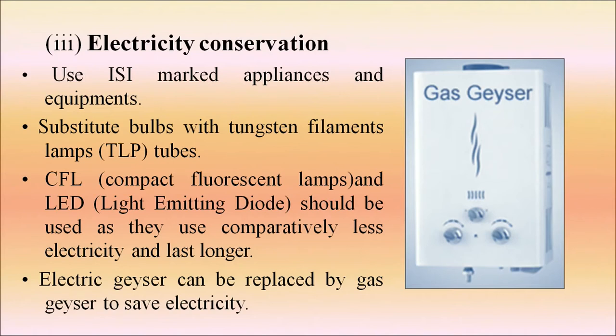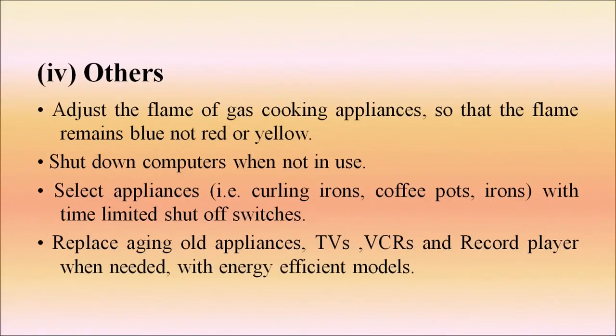With growing awareness about the depletion of global energy reserves and the adverse environmental impact of energy use, efforts are underway to develop energy-efficient machines and technologies. Use ISI-marked appliances and equipment. Replace bulbs with tungsten filament lamps; CFLs and LEDs use comparatively less electricity and last longer. Electric geysers can be replaced by gas geysers to save energy. Adjust the flame of cooking gas appliances so the flame remains blue, not red or yellow. Shut down computers when not in use. Replace aging appliances — TVs, VCRs, and record players — with energy-efficient models.